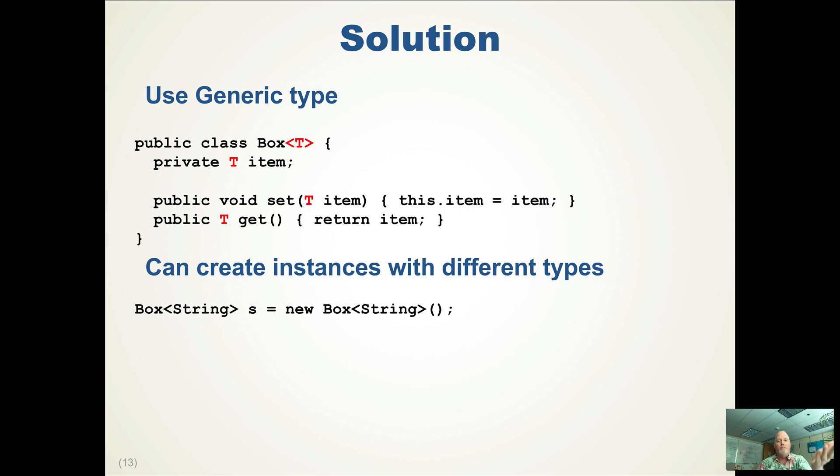Because you know the type based upon the declaration of the variable. s is a box of strings. If we want a box of integers, we say Box Integer, the variable name, and we create a new box.